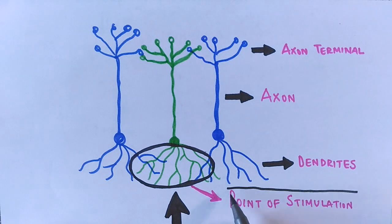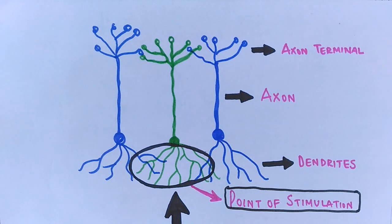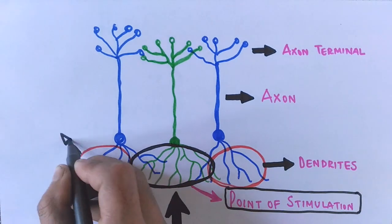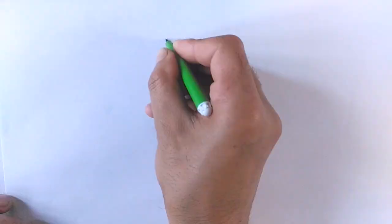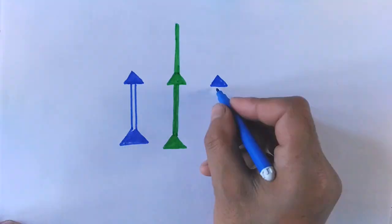But we see at this point the dendrites of other neurons are also getting stimulated, although less, but are getting stimulated. But when there is lateral inhibition, these edges remain inhibited from getting stimulated. Now let's see how these neurons inhibit the surrounding neurons.